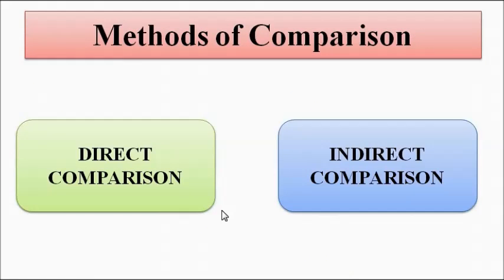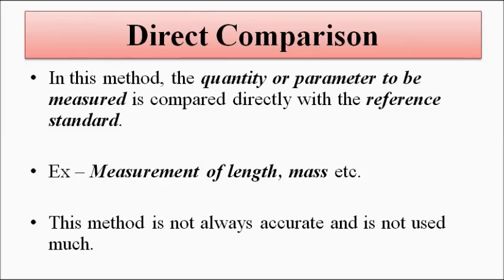The method of comparison can be divided into two categories: direct comparison and indirect comparison. In direct comparison, the unknown parameter or quantity we want to measure — be it length, mass, or time — is directly compared with a reference standard.